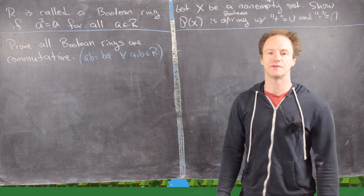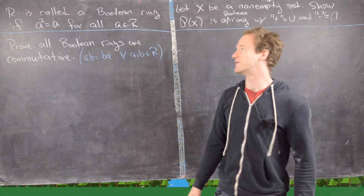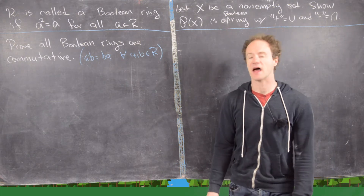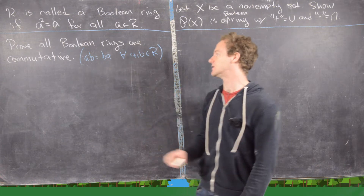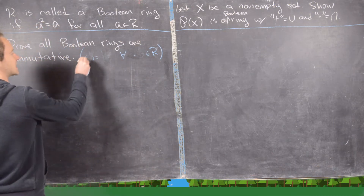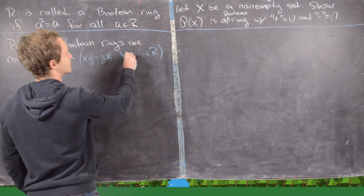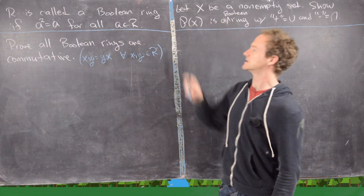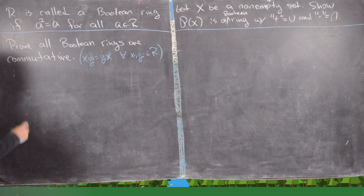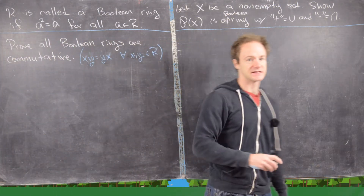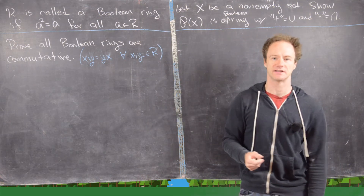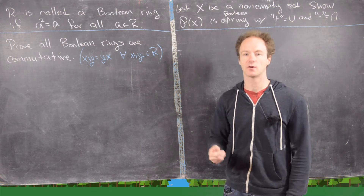The next examples involve Boolean rings. We say R is a Boolean ring if a squared equals a for all a in R. The first result is that all Boolean rings are commutative — that is, AB equals BA for all A, B in R. We'll use x and y as variables. The trick is to combine x and y together, square it, and use the Boolean condition to derive that x times y equals y times x.